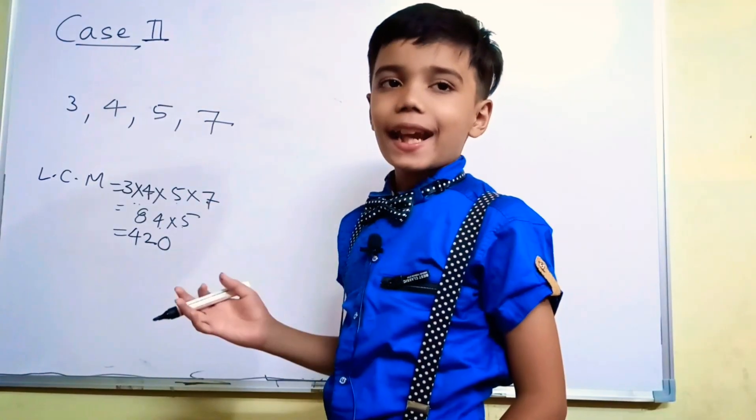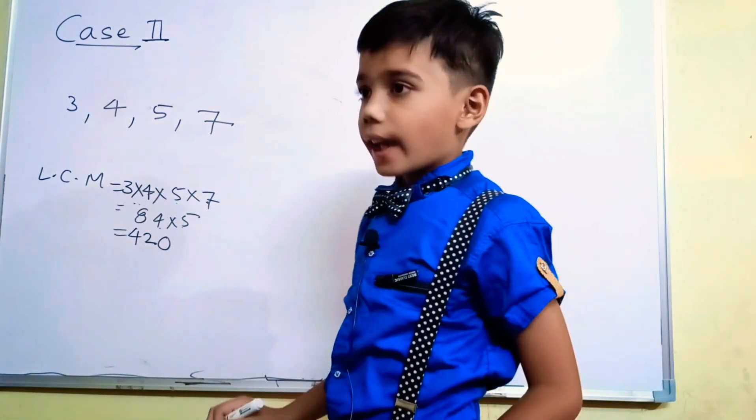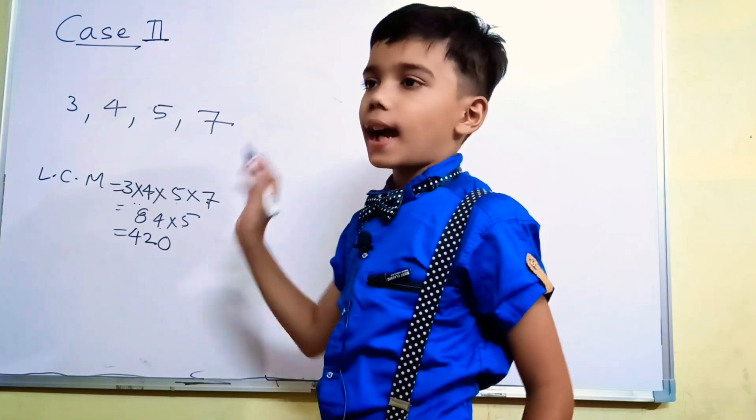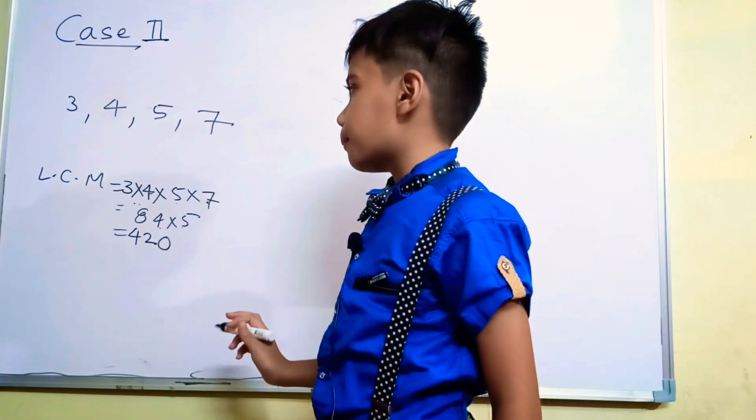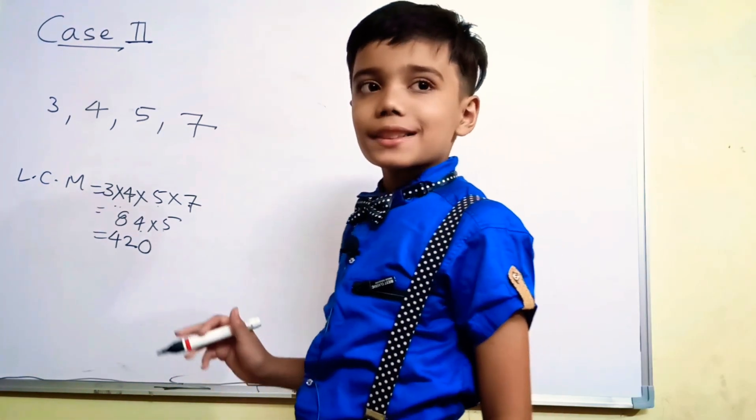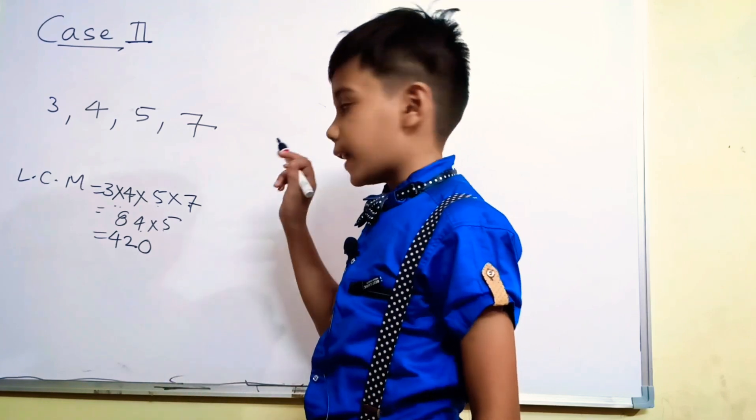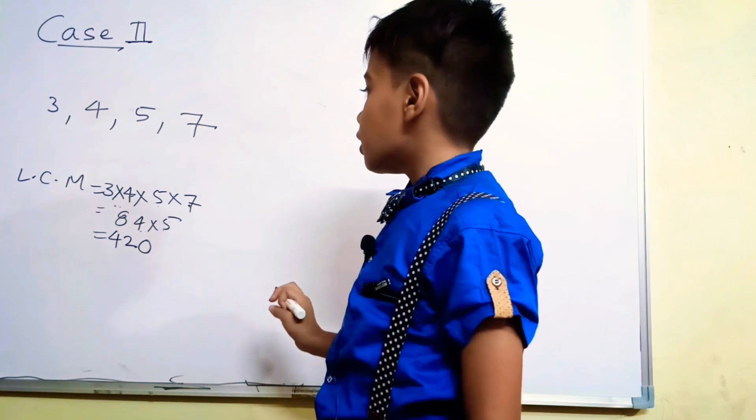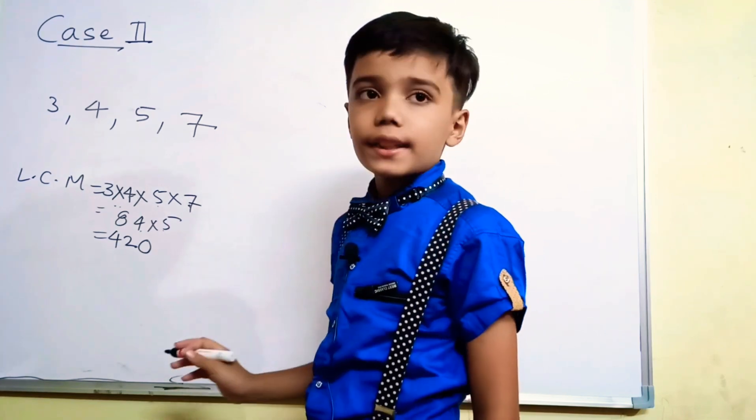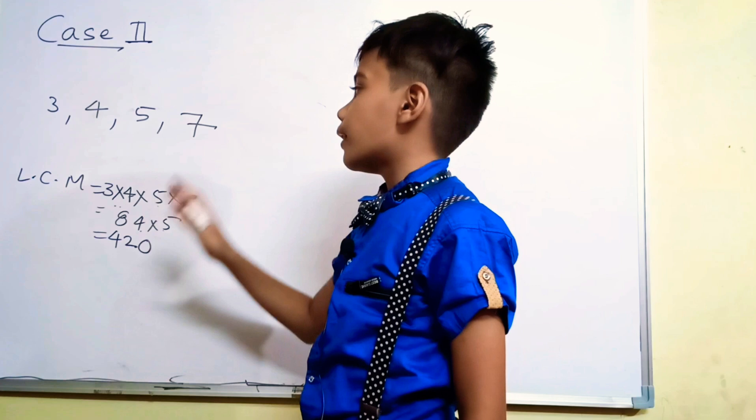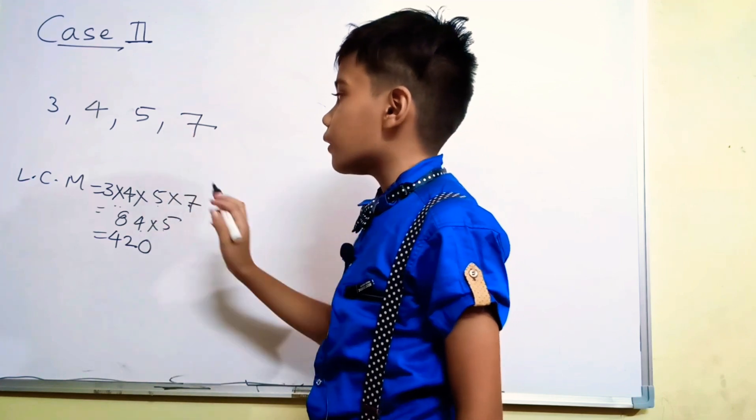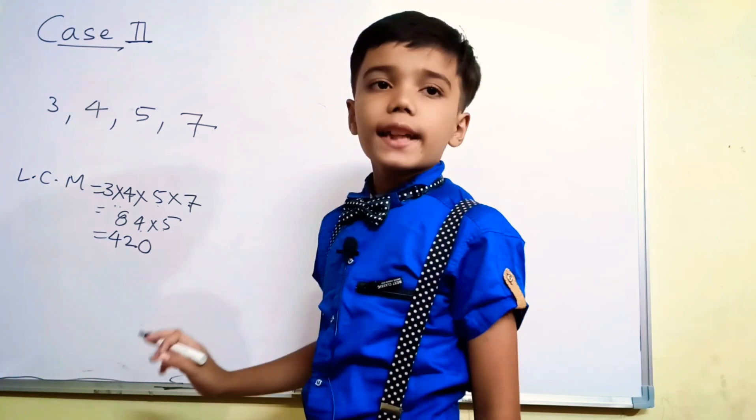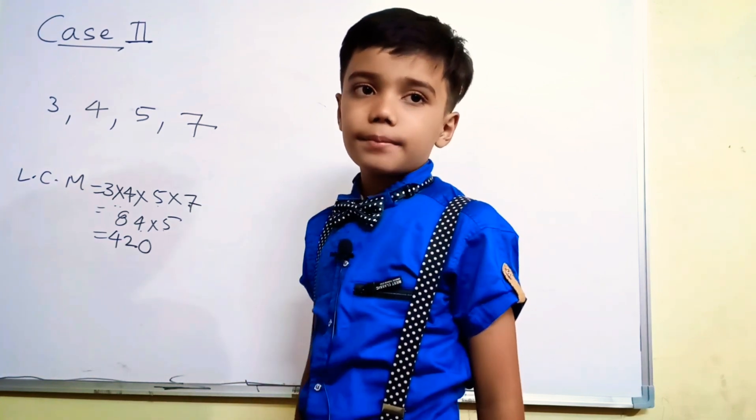Let's have one more example. Suppose we are having 3, 4, 5, 7. Again, these are all co-prime numbers. Co-prime numbers are the numbers which cannot divide from each other. So suppose we are having 3, 4, 5, 7. Our LCM is product of all of these numbers. 3 into 4 into 5 into 7. We will get 420 the LCM. So see friends how LCM is easy.